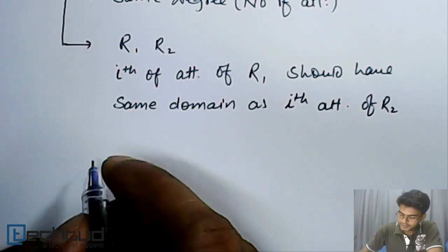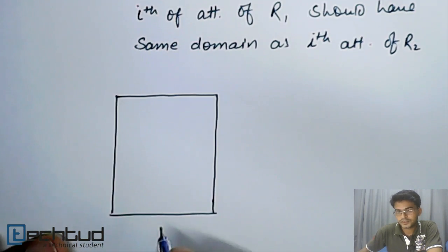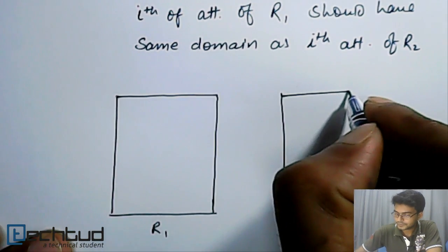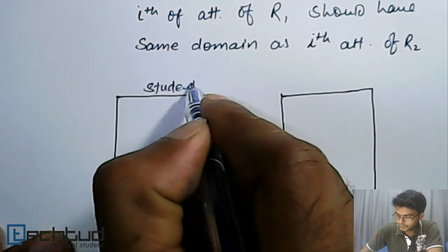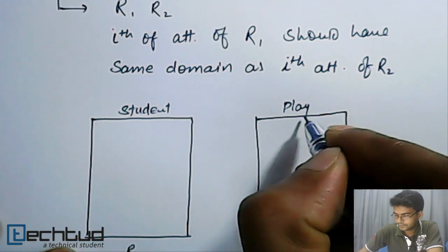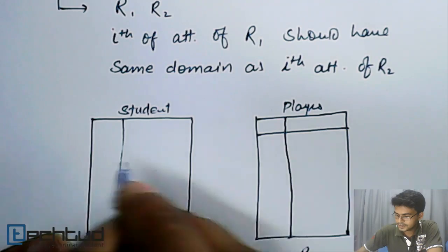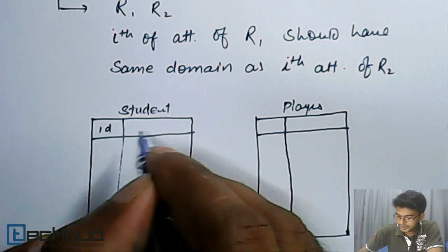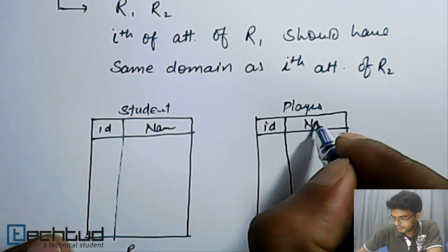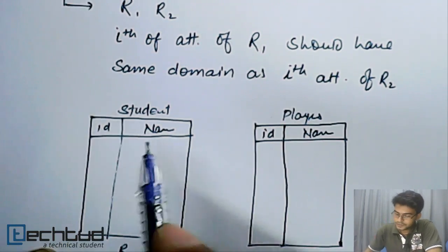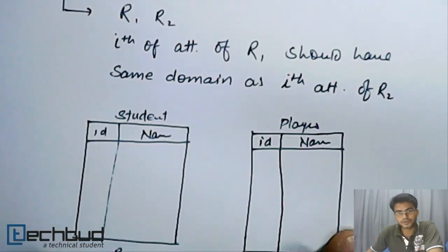What I mean by saying this is, let's say two tables are there: one is R1 for students and one is R2 for players. If we have to perform some union operation on this, they must have the same number of attributes, the same degree. In this case, both have two attributes, so degree is two for both.